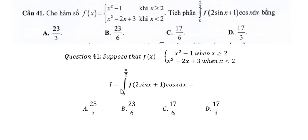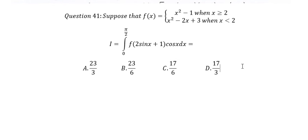We have I equals the integral from 0 to π/2 of f(2sin x plus 1) multiplied with cos x dx. So I will show the technique how to answer the question. We need to use integration by substitution.